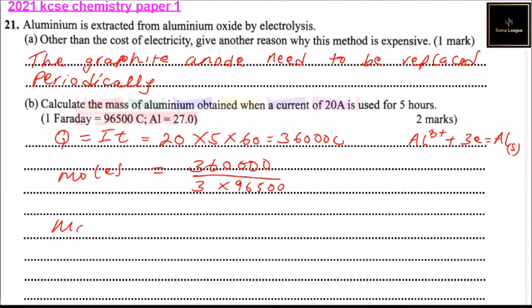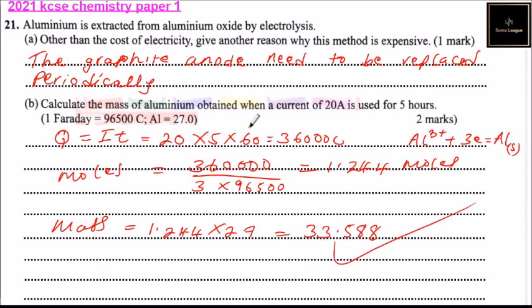So we say mass equals... when you multiply here you get 1.244 moles, and we have the atomic number there. So mass equals 1.244 multiplied by 27, given here, and you'll be able to find that this equals 33.588. So that's how you work out that, and you get yourself three marks.